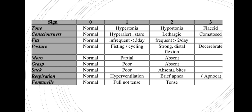For presence of fits: if there are no fits that's normal so that's 0, if they are infrequent which is less than 3 fits a day that's 1, and if they are frequent which is more than 2 fits a day that's 2. For posture: if it's the usual posture that's normal so that's 0, if they are fisting or cycling that's 1, if they show strong distal flexion that's 2, and if they are decerebrate — in an extended posture — that's 3.